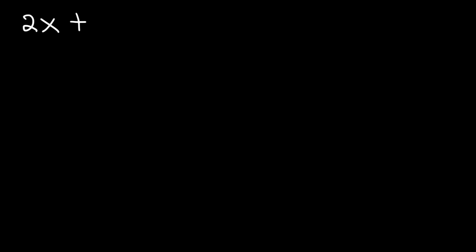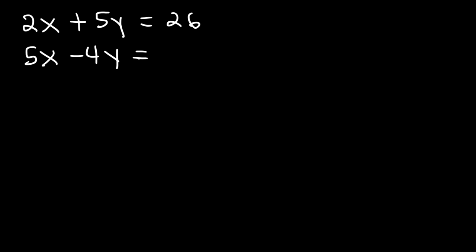In this lesson we're going to use Cramer's rule to solve a system of linear equations with two variables. We have 2x plus 5y is equal to 26, and 5x minus 4y is equal to negative 1. Calculate the value of x and y using Cramer's rule.